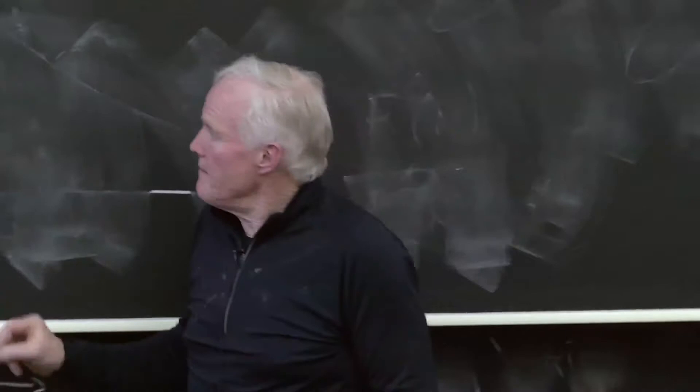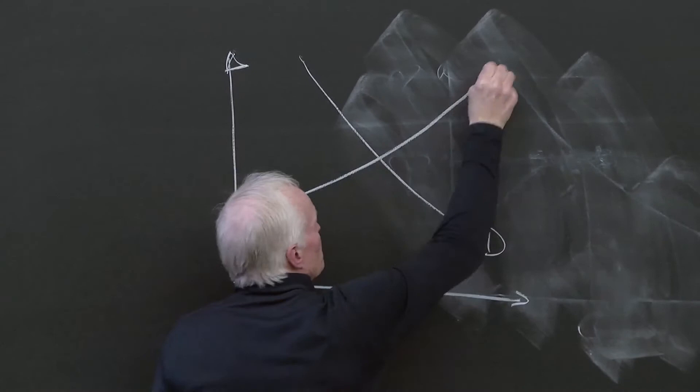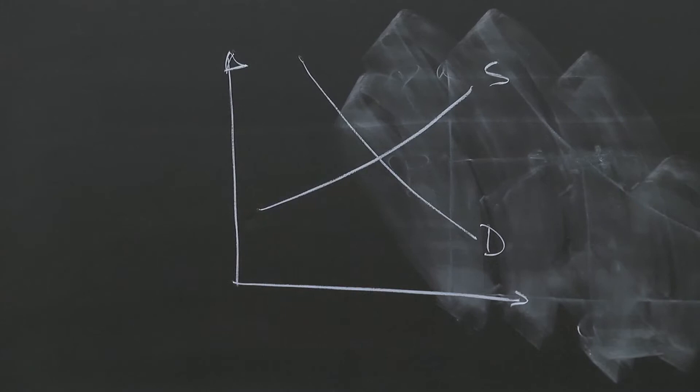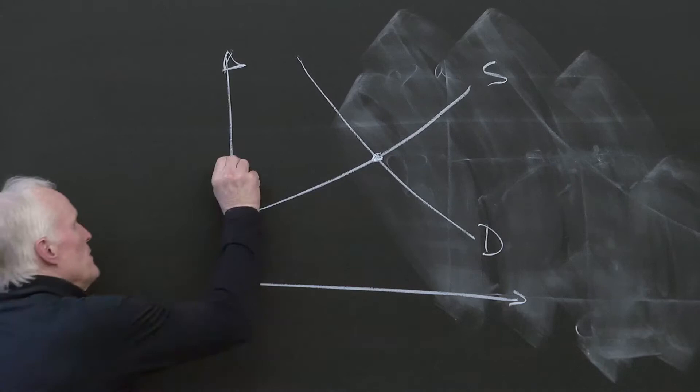And so the subsidy, here's demand, here's supply, so we've got our supply and demand view of the world, and here is the market equilibrium absent the subsidy.